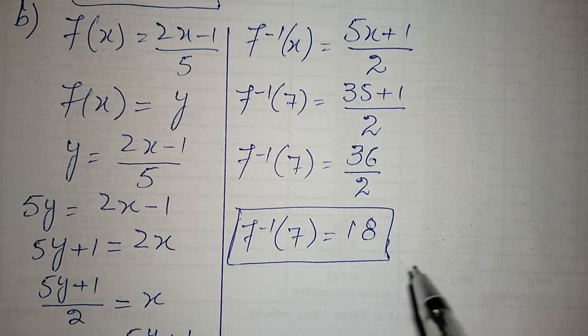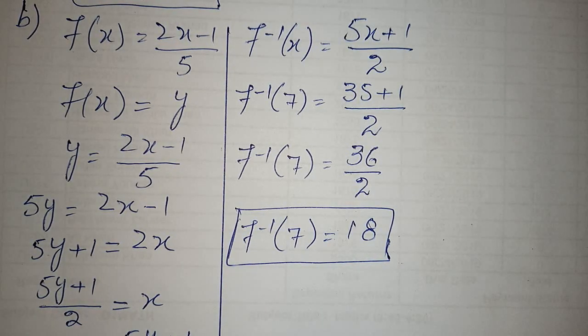f inverse of 7 is equal to 18. When your inverse function is 5x plus 1 upon 2, then the value of f inverse of 7 will be 18.